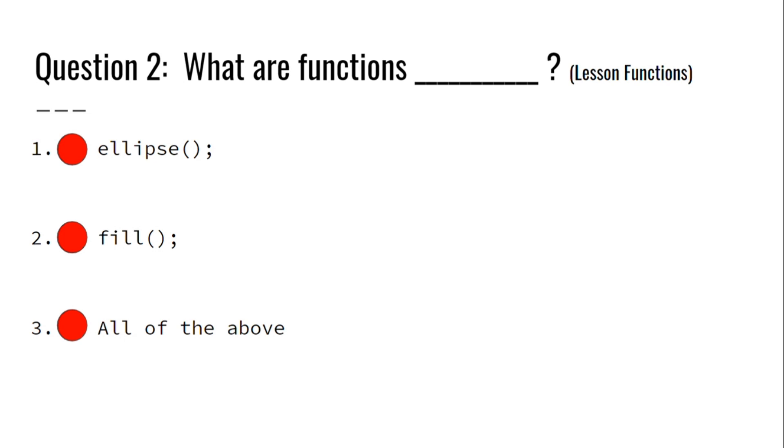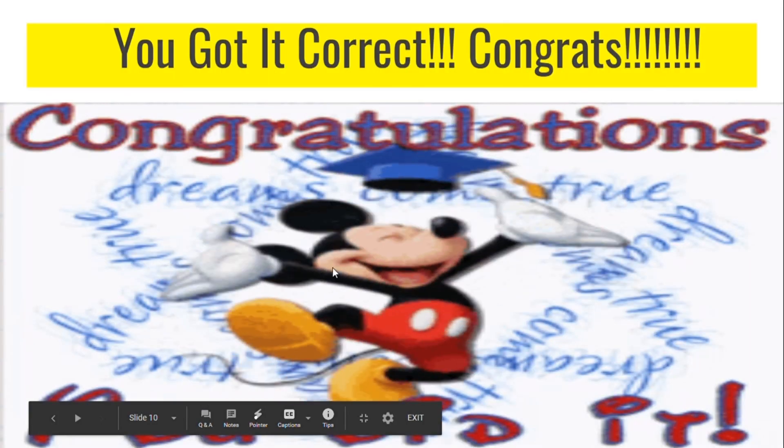Okay, Mohammed. I'm going to be asking you a question now. Question 2: What are functions? 1. Ellipse followed by parentheses and a semicolon. 2. Fill followed by parentheses and a semicolon. And 3. All of the above. I think I will go with all of the above because everything is a function. Yay! I got it correct!